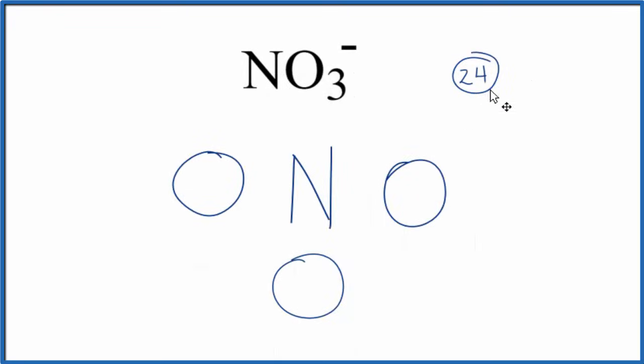We have a total of 24 valence electrons for the NO3 minus Lewis structure. Let's put a pair of electrons between atoms. This will form the chemical bond. Once we've done that, we can put pairs of electrons around each oxygen here to complete its octet until we've used 24 valence electrons.